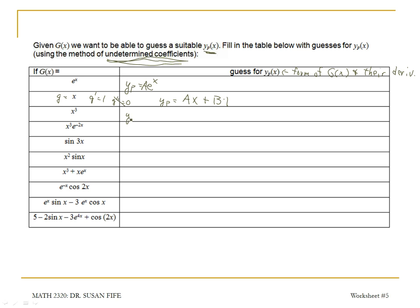In general, whenever you have a polynomial, you want to include that polynomial and all its derivative forms. So if g of x is x cubed, the derivative gives an x squared term, the derivative of that gives an x term, and the derivative of x gives a constant. So y_p would be Ax cubed plus Bx squared plus Cx plus D, which includes all the forms of the derivative of x cubed.